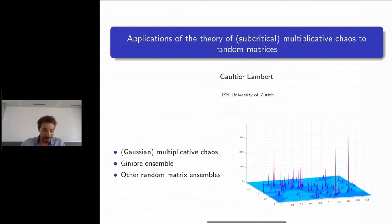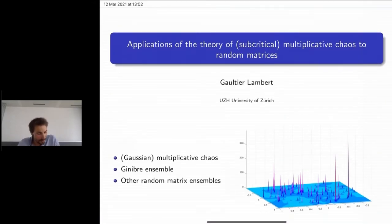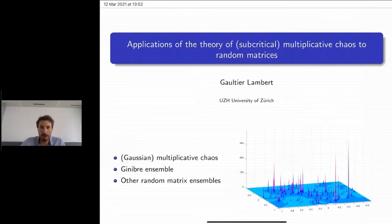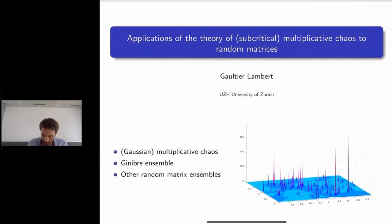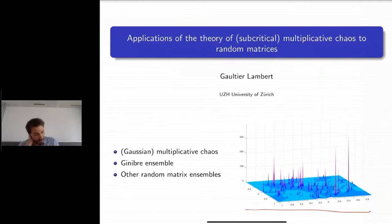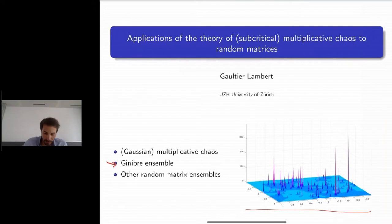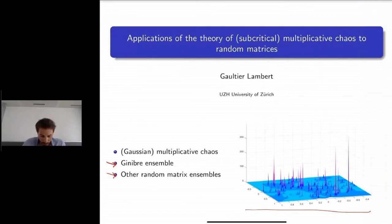Thank you very much for the invitation. The point of this presentation is to talk about some applications of a theory called multiplicative chaos in relation to random matrices. Because people may not be familiar with multiplicative chaos, I will start by reviewing the theory and explaining where the pictures come from, then discuss applications focusing on the Ginibre ensemble as a natural example, and then mention other known results.